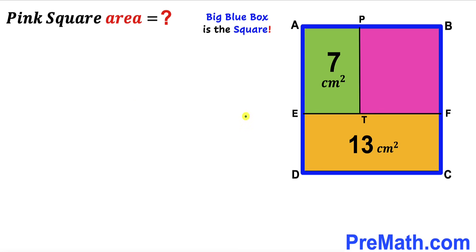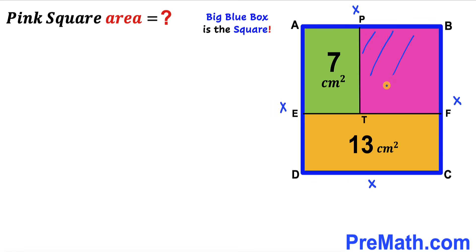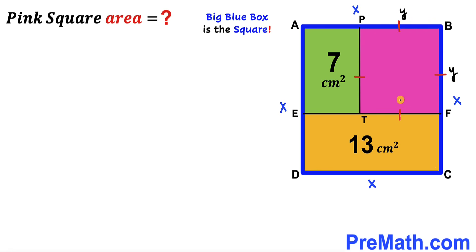Let's get started. Focusing on the big blue square ABCD, I'm going to label its side AB as X. Since all sides are congruent in a square, all side lengths are X across the board. Now focusing on the pink shaded square, I'll label its side length as Y, so all its sides are Y across the board.